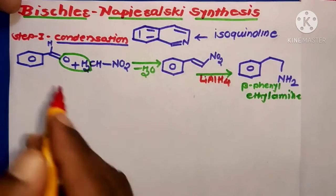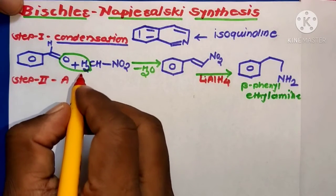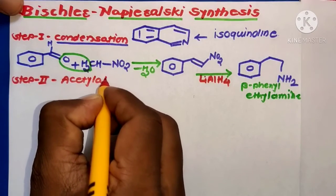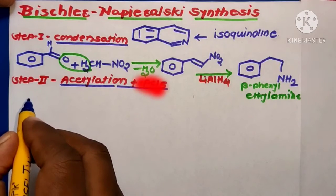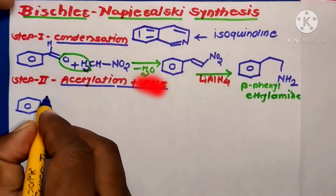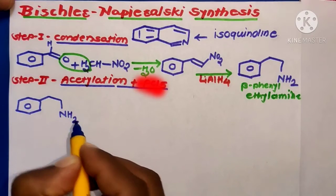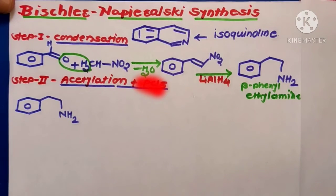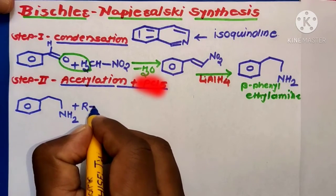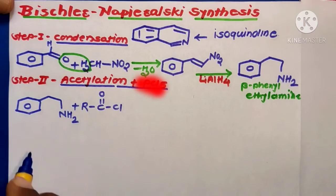Step two: acetylation of beta-phenylethylamine. The beta-phenylethylamine, which contains an NH2 group, is reacted with an acid chloride (R-COCl).